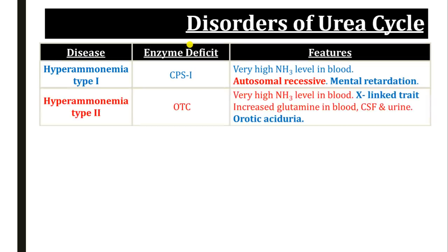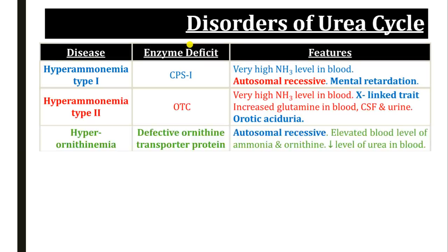The second disorder is hyperammonemia type 2, due to deficiency of ornithine transcarbamylase enzyme. This disorder is usually inherited as an X-linked trait. This enzyme deficiency leads to high levels of ammonia in the blood, and this ammonia is taken up by glutamic acid, so it increases the level of glutamine in the blood, CSF, and urine. Due to deficiency of this enzyme, the carbamoyl phosphate formed in the first step is channeled into pyrimidine nucleotide synthesis, resulting in increased production of orotic acid, which leads to orotic aciduria.